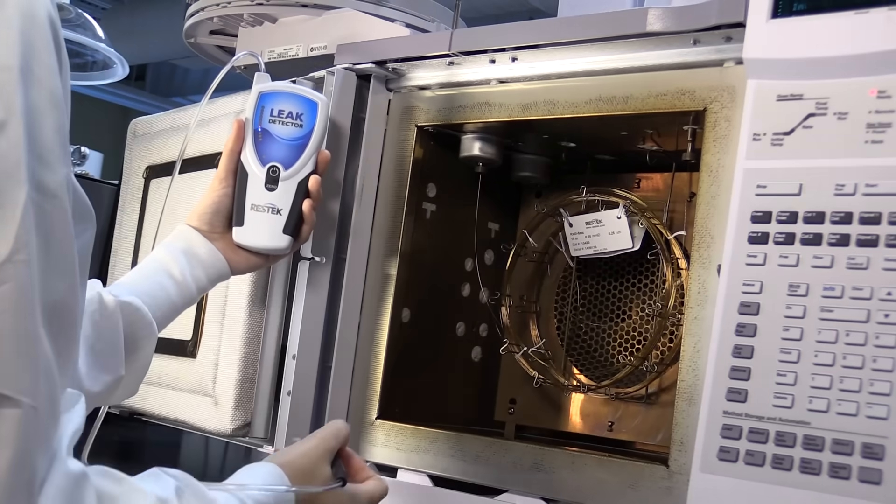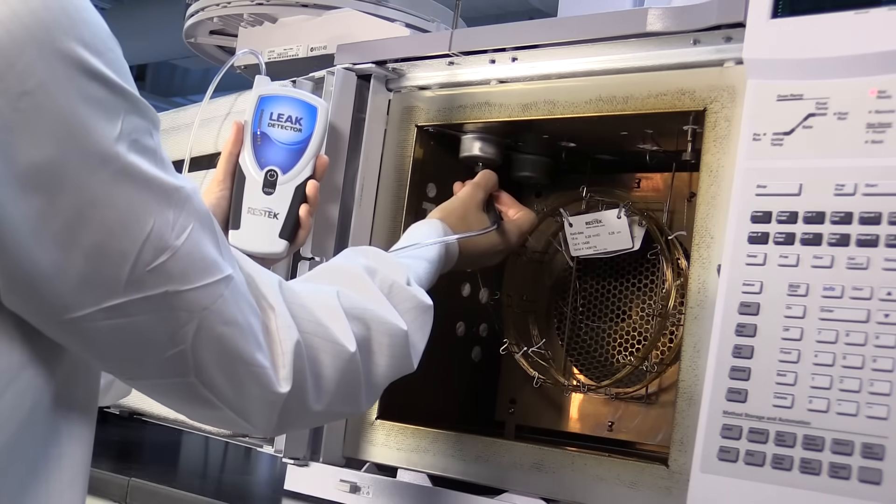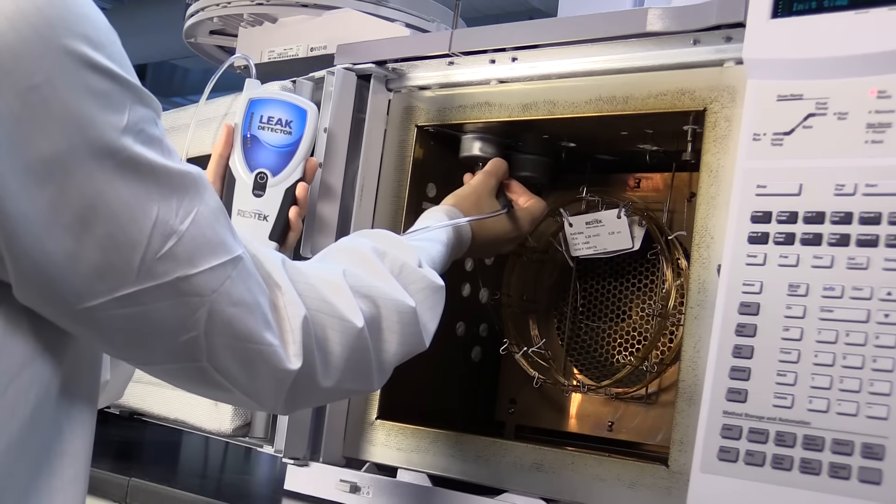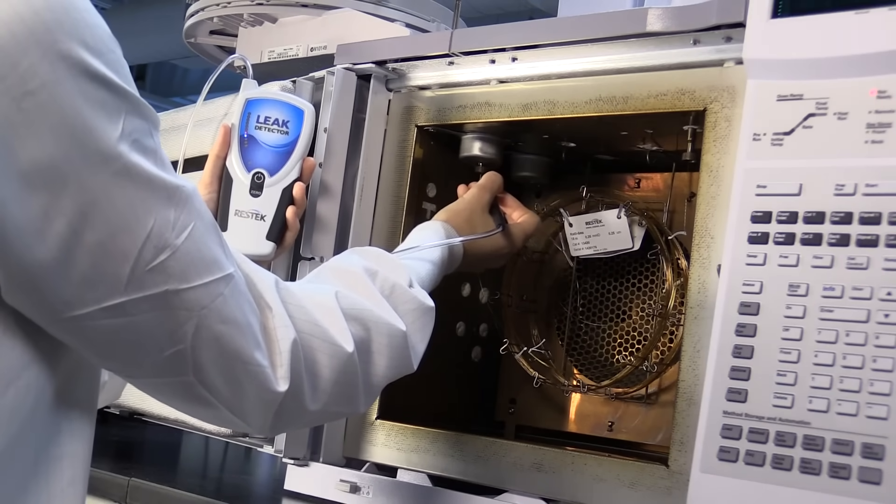Leaks around the bottom of the inlet, specifically the reducing nuts, column nuts, and detector nuts are common, especially since temperature cycling can loosen nuts that are not properly tightened.